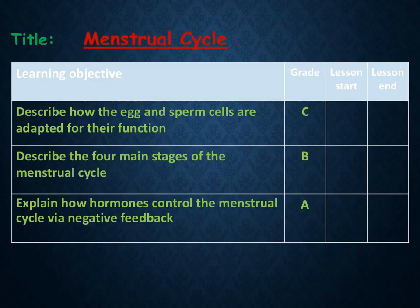This is the second video in the Edexcel B3 revision tutorial series. In this video we will be looking over the menstrual cycle, how both the egg and sperm cells are adapted for their functions, the four main stages of the menstrual cycle, and finally how hormones control the menstrual cycle via negative feedback.